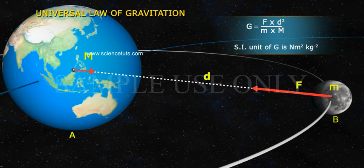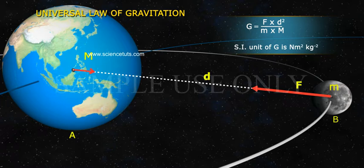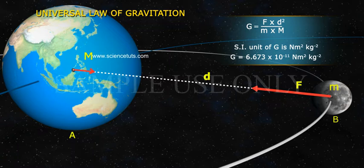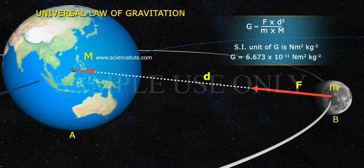The SI unit of G is Nm square kg to the power of minus 2. The value of G is 6.673 into 10 to the power of minus 11 Nm square kg to the power of minus 2.